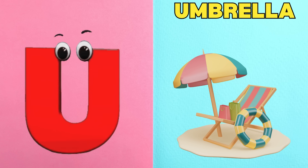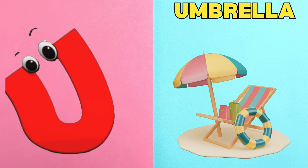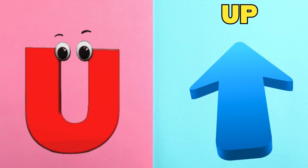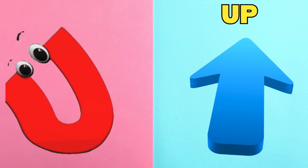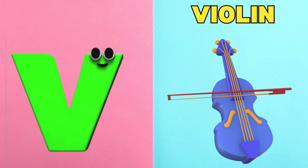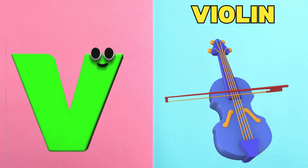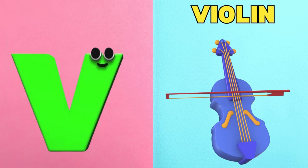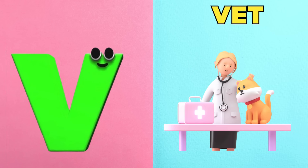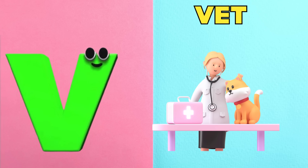U is for Umbrella. U, U-U-Umbrella. U is for Up. U, U-U-Up. V is for Violin. V, V, Violin. V is for Vet. V, V, Vet.